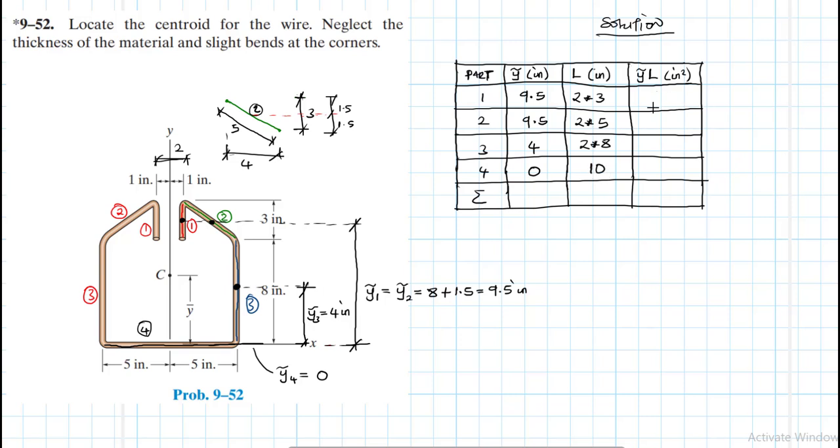And then the length is 8, so it would be 2 times 8. Then the length for the fourth one we just took the whole length as is and this equal to 10. So let's get the products. We have 9.5 times 2 times 3, which is 57. And here is 57. And then we have 4 times 2 times 8, which is 64. And then 0 by 10 is just 0. So let's add up the length and we add up the product of centroid times the length.